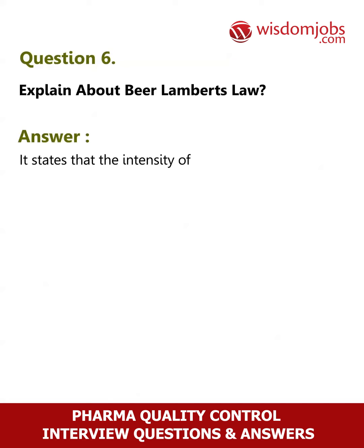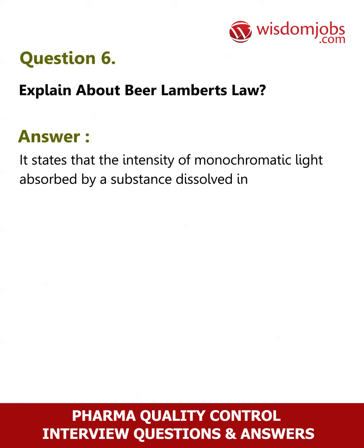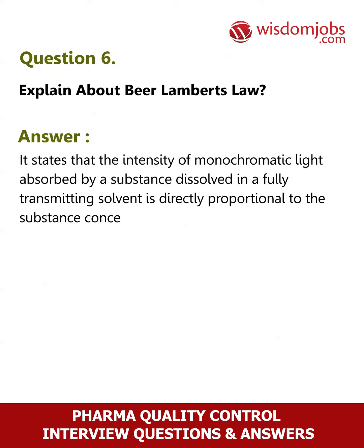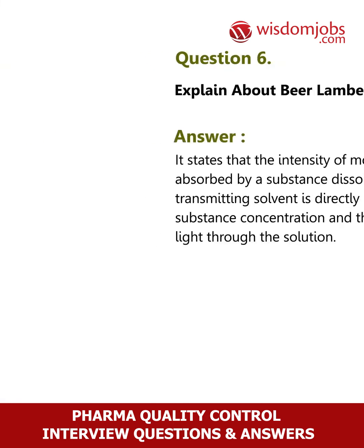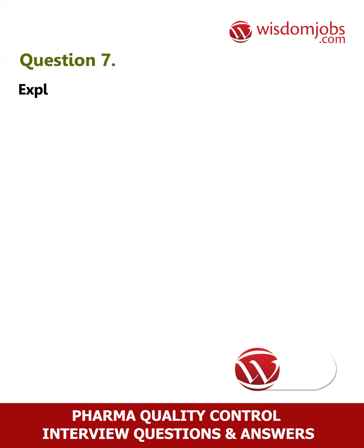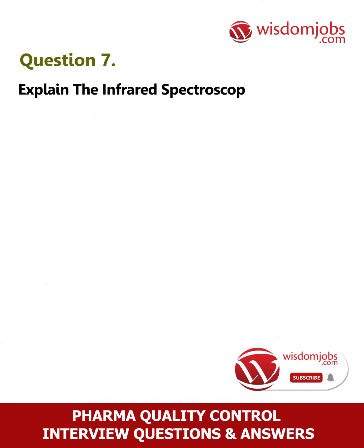Question 6: Explain Beer-Lambert's Law. Answer: It states that the intensity of monochromatic light absorbed by a substance dissolved in a fully transmitting solvent is directly proportional to the substance's concentration and the path length of the light through the solution.